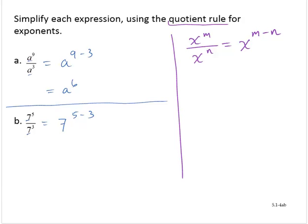So we have 7 raised to the 5 minus 3 power. And 5 minus 3 is 2. So we have 7 to the second power or, more simply, 49.